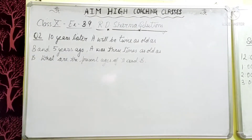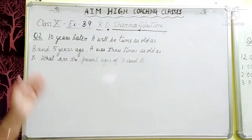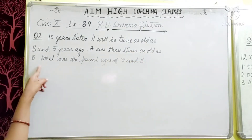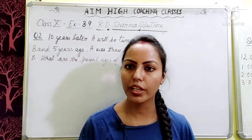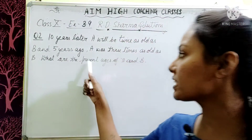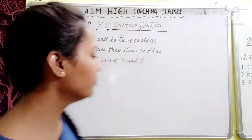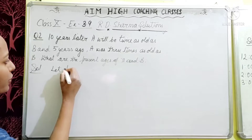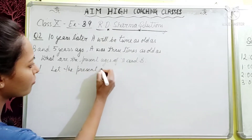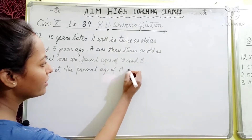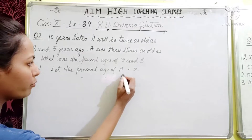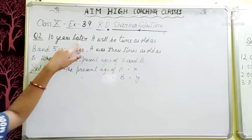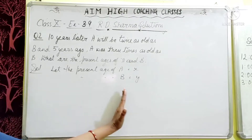Question number 2: 10 years later, A will be twice as old as B. And 5 years ago, A was 3 times as old as B. What are the present ages of A and B? Our variables: let x = present age of A and y = present age of B.